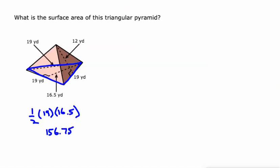0.5 times 19 times 16.5, that's 156.75. This side is another triangle, which is going to be one half times 19 times 12.